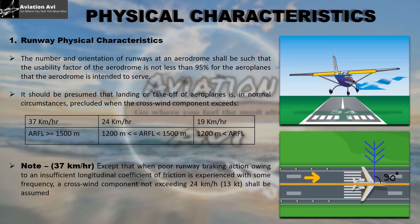Runway Physical Characteristics: The number and orientation of runways at an aerodrome shall be such that the usability factor of the aerodrome is not less than 95% for the aeroplanes the aerodrome is intended to serve. This means airports must design and orient their runways so they can be used safely at least 95% of the time. This is calculated based on the wind conditions at the aerodrome. There is a limit on the crosswind component — if the wind blows across the runway at an angle, this makes it difficult to take off or land.